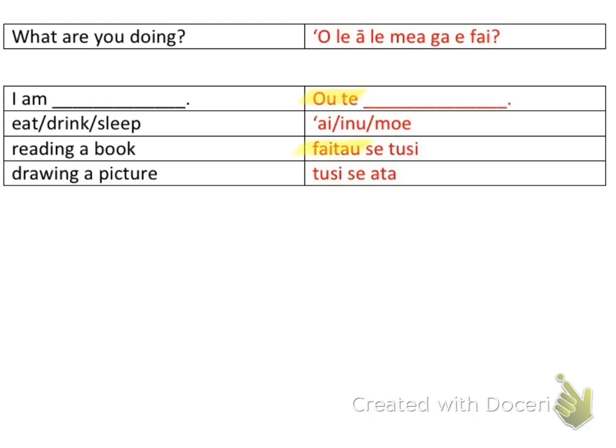You can also say 'I am reading a book' — 'faitau se tusi,' or 'drawing a picture' — 'tusi se ata.' There are more things you can add, but we're keeping it simple since you're just starting to learn this language. Till next time guys, see you later — 'tofa soifua!'